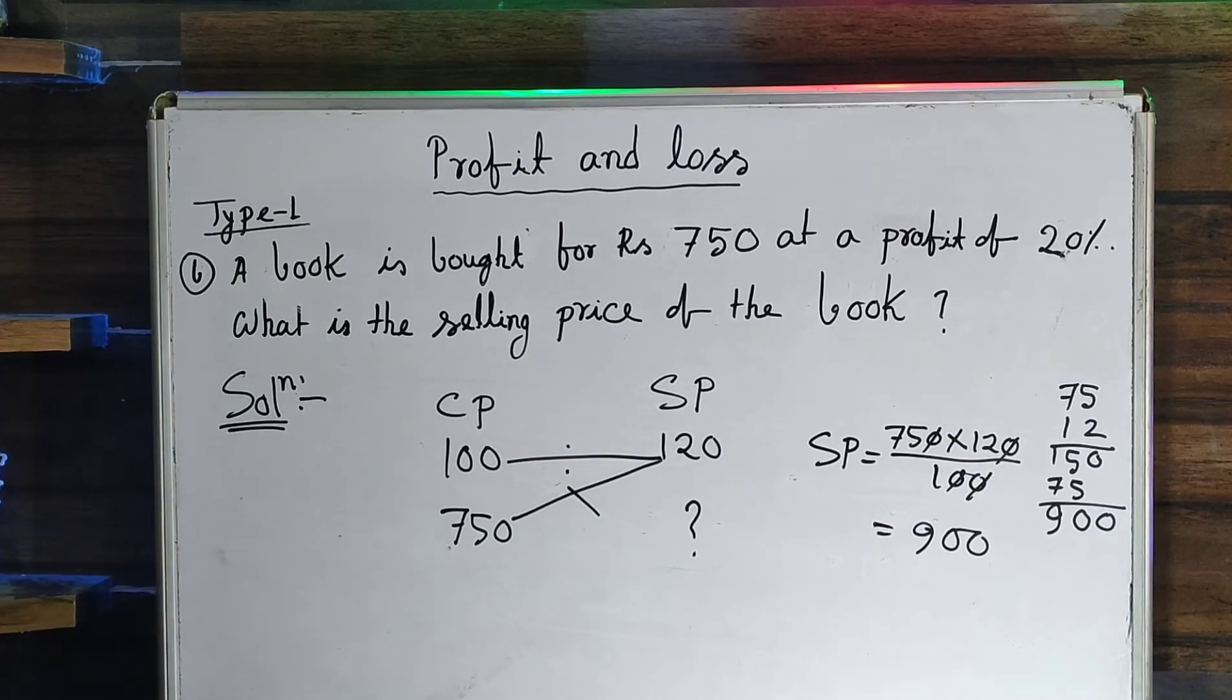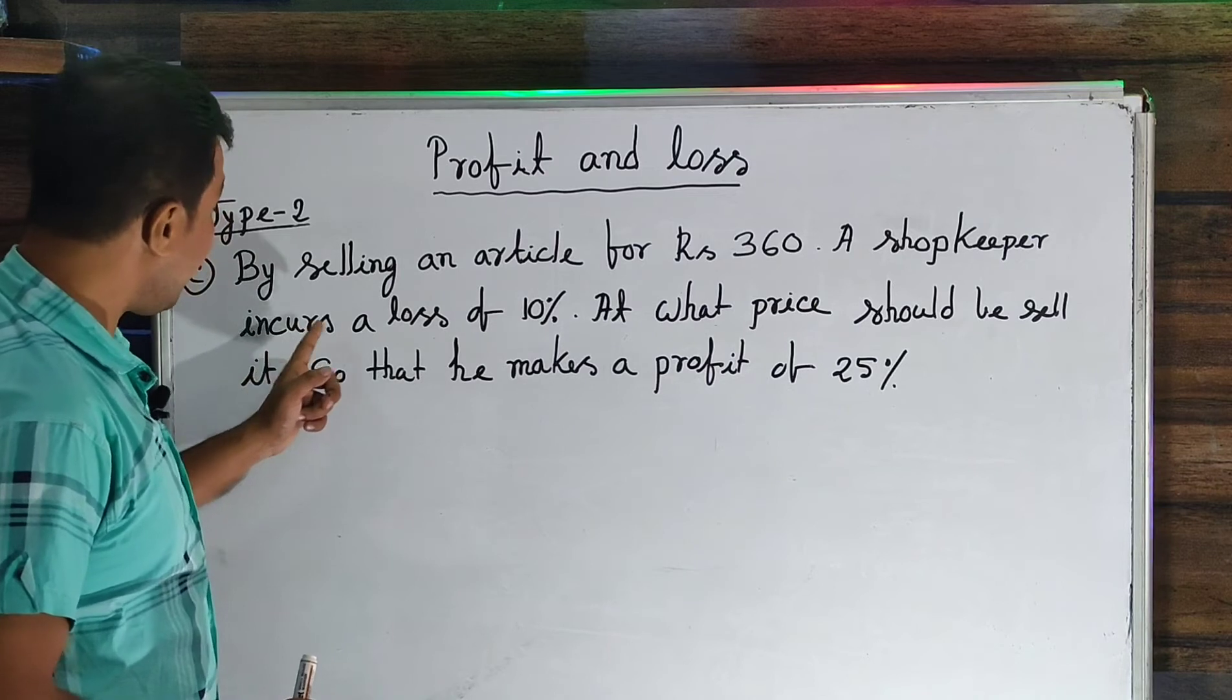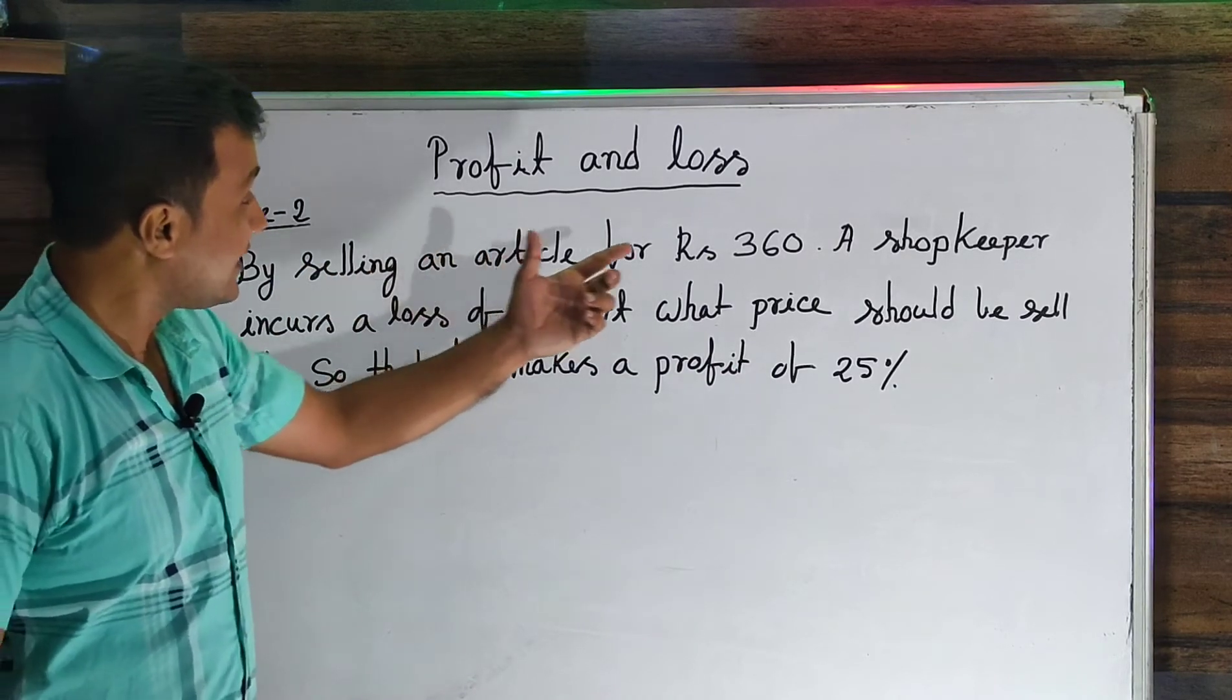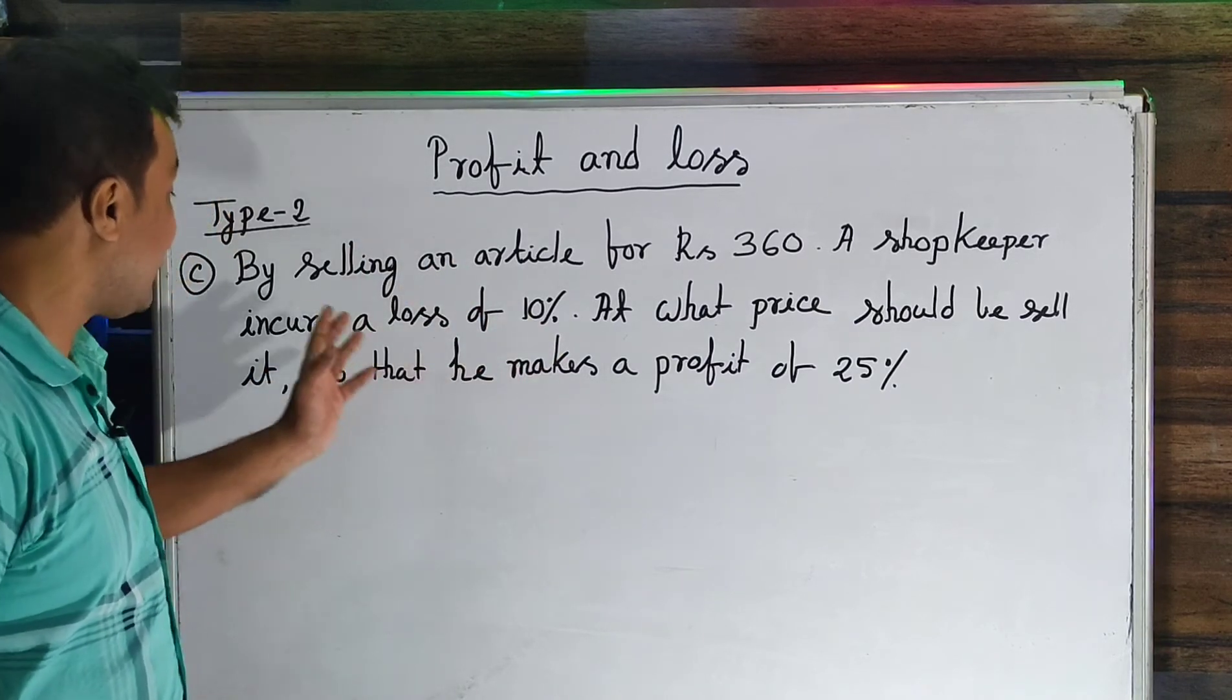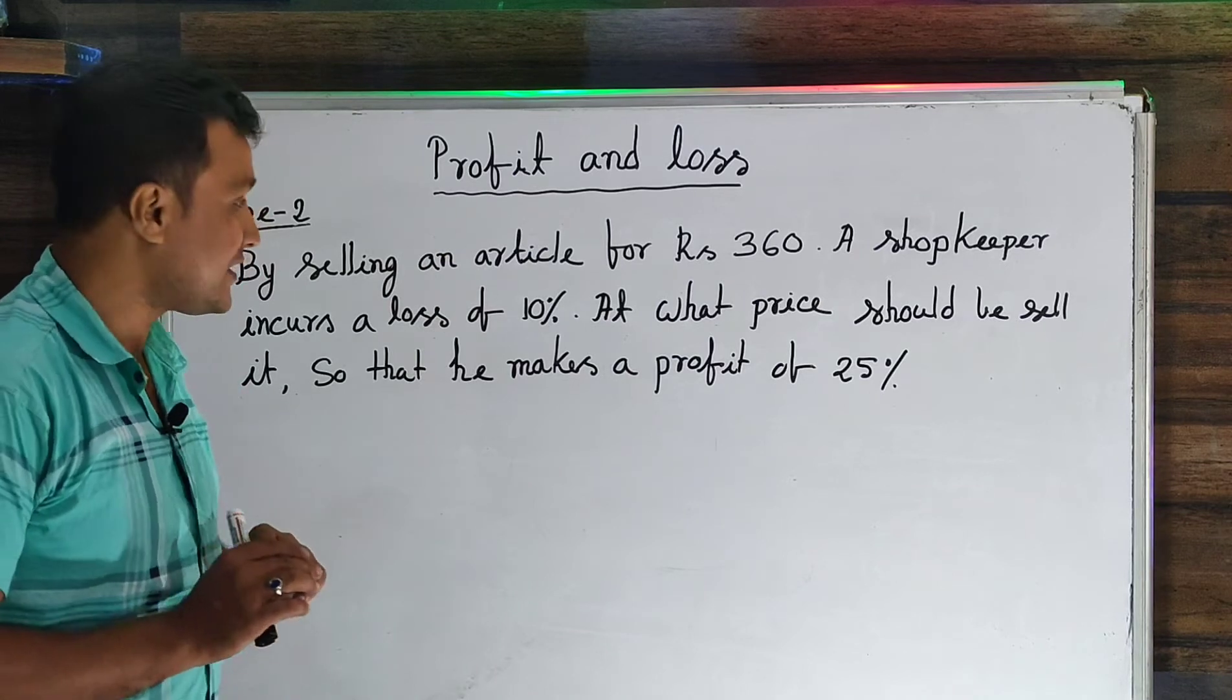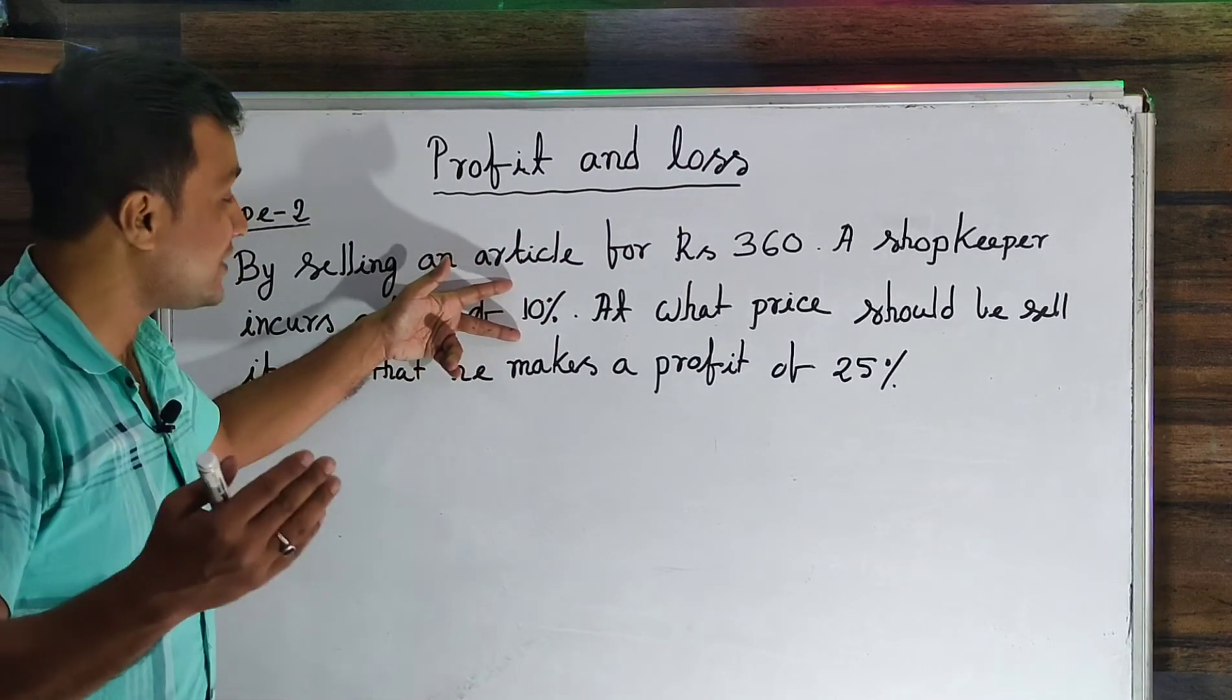Next question is Type 1: By selling an article for Rs. 360, a shopkeeper incurs a loss of 10%. At what price should he sell it so that he makes a profit of 25%? The first selling price is 360 at 10% loss. This is the first condition.